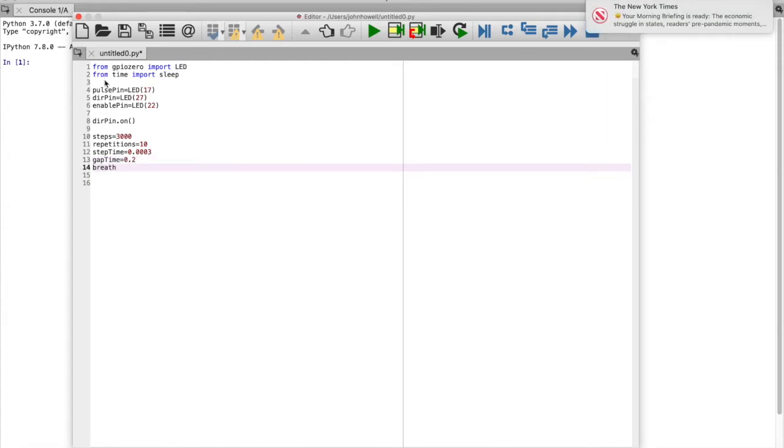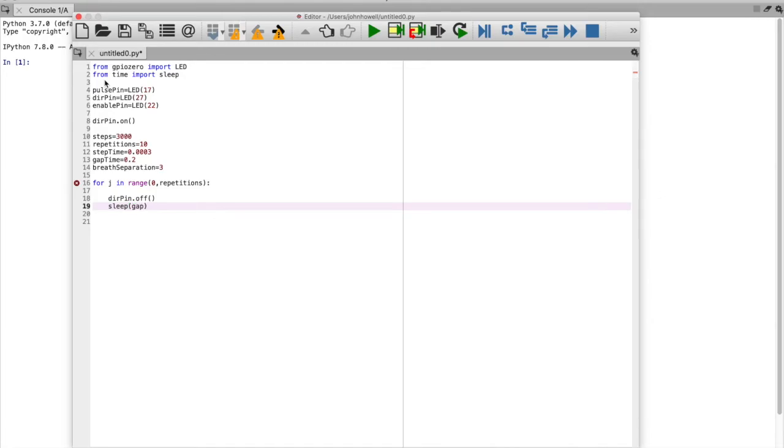I wrote a for loop that will perform the number of repetitions. To start, the direction pin is set to off with a short gap time. The first nested for loop then causes 3000 pulses in one direction, followed by a gap time and toggling the direction.